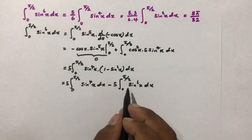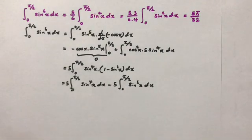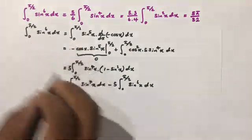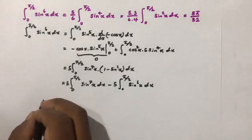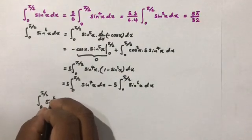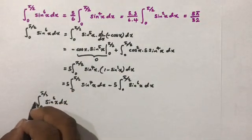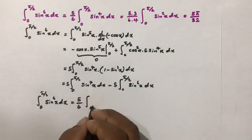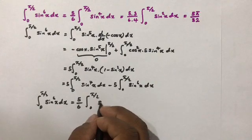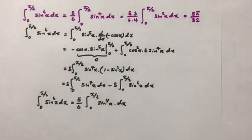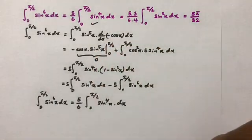We take the sin⁶(x) term to the left-hand side. The −5 becomes +5, so we get 6 times the integral from 0 to π/2 of sin⁶(x) dx equals 5 times the integral from 0 to π/2 of sin⁴(x) dx, which proves the reduction formula: the integral of sin⁶(x) = (5/6) times the integral of sin⁴(x).